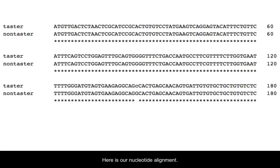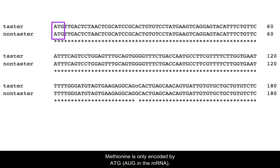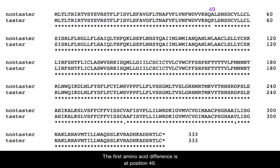Here is our nucleotide alignment. We trimmed these sequences so that only coding sequence is included, so we know that the first three bases will give us the first codon, which is of course methionine. Methionine is only encoded by ATG, or in the messenger RNA, AUG.